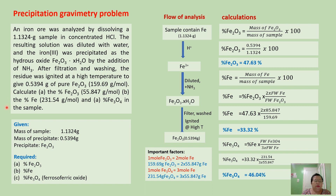When we are going to solve a problem, the technique is first you have to write down all the given values in the problem. So in this problem, we are given the mass of sample which is equal to 1.1324 grams. Also we are given the mass of precipitate which is equal to 0.5394 grams.